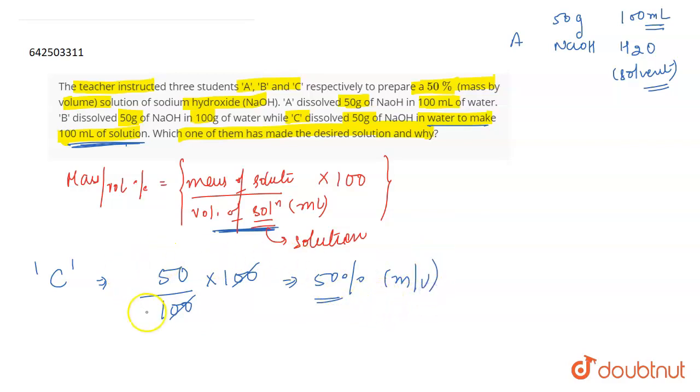Whereas if we talk about student A, student A dissolved 50g NaOH in 100ml water. Water is a solvent, so this 100ml is not the volume of the solution. This will not come out to be 50%, so what A did was completely wrong.